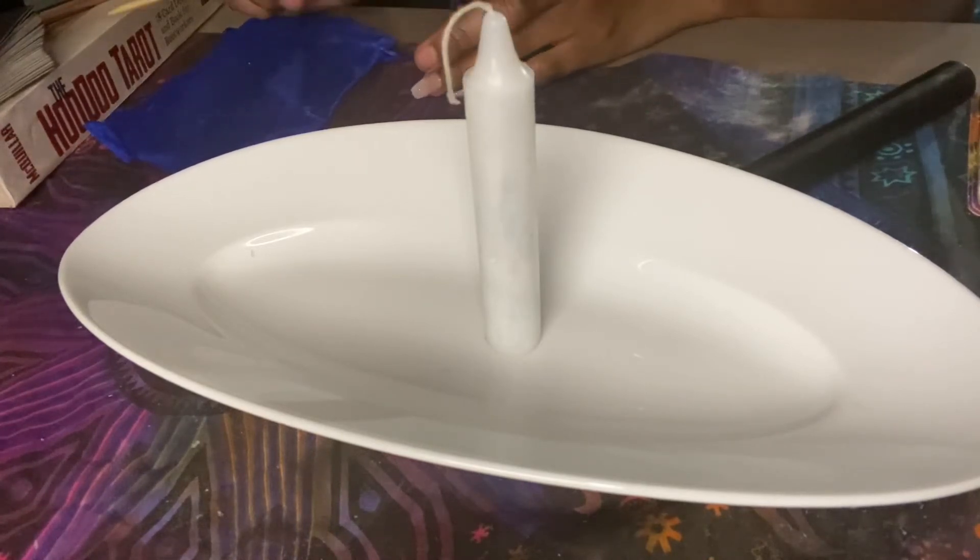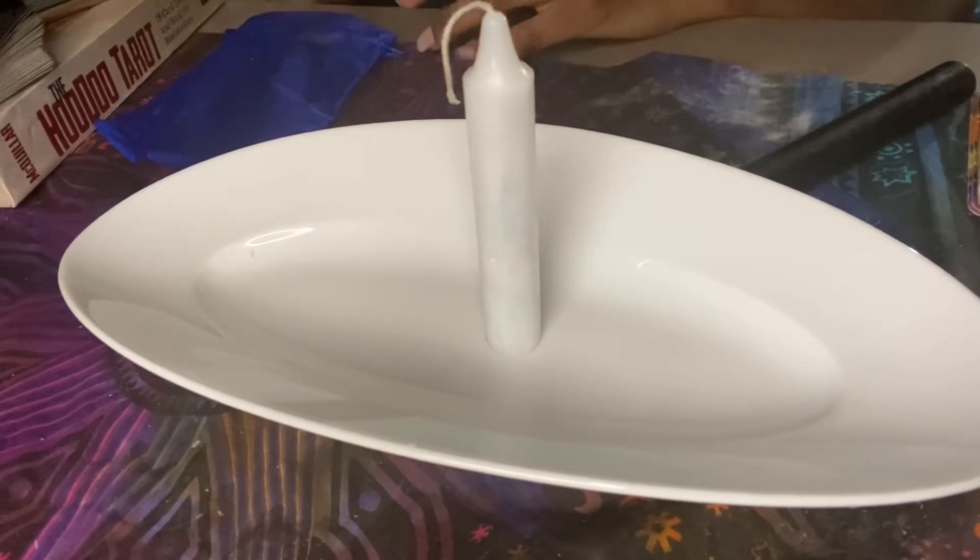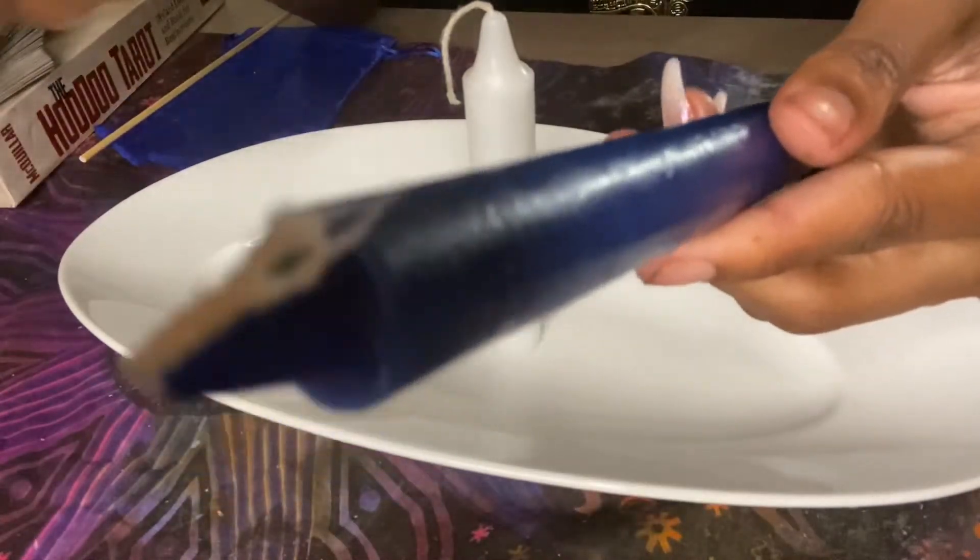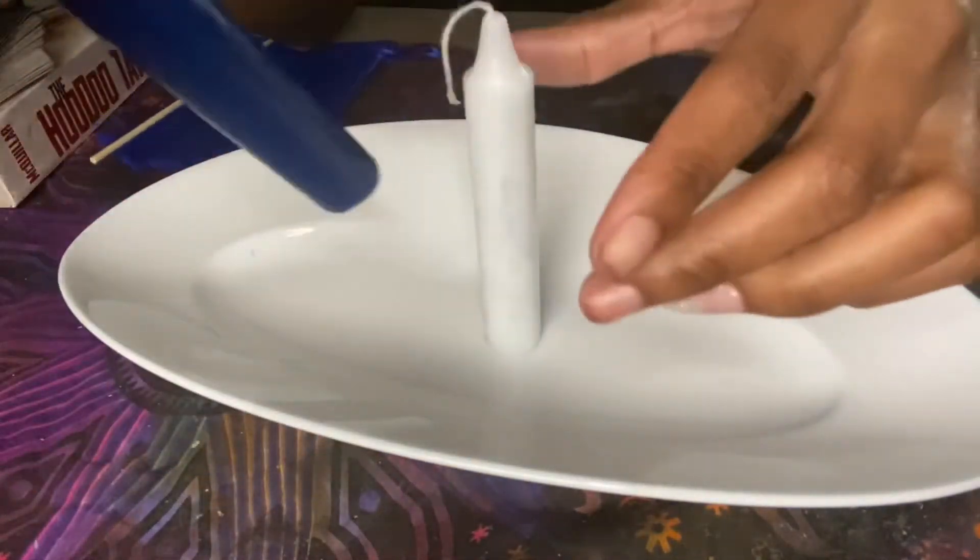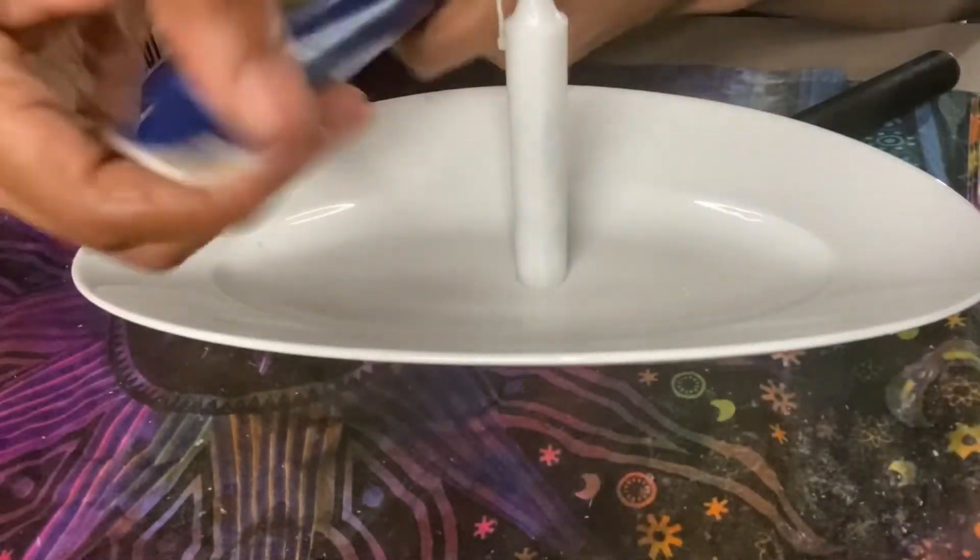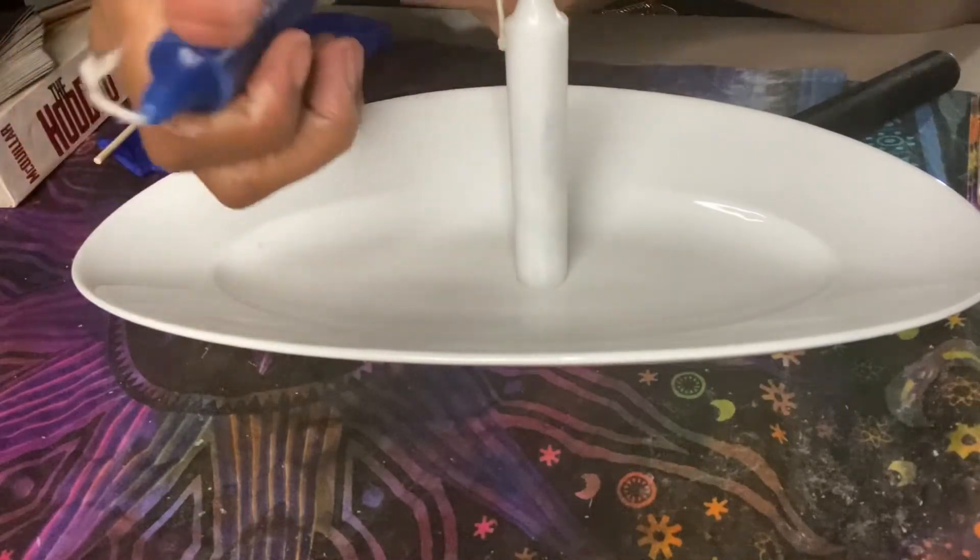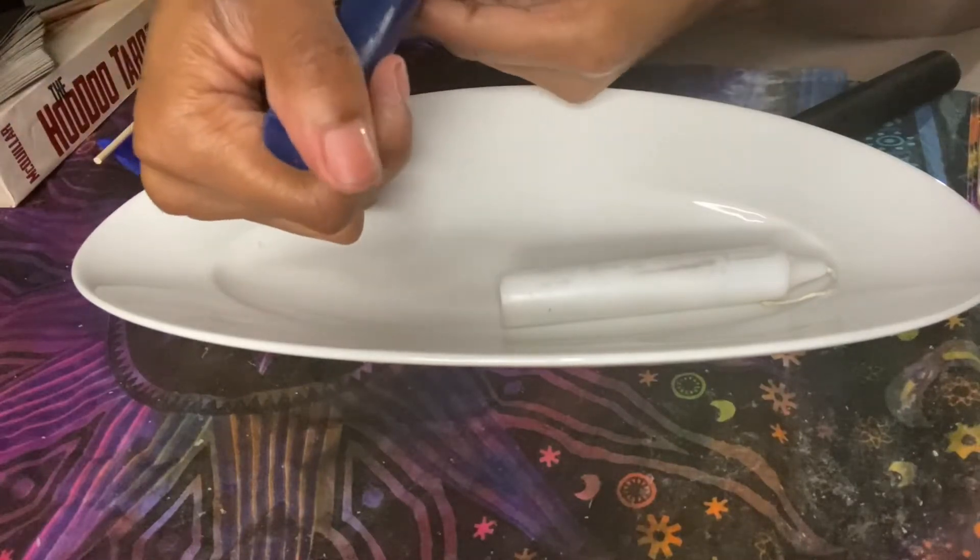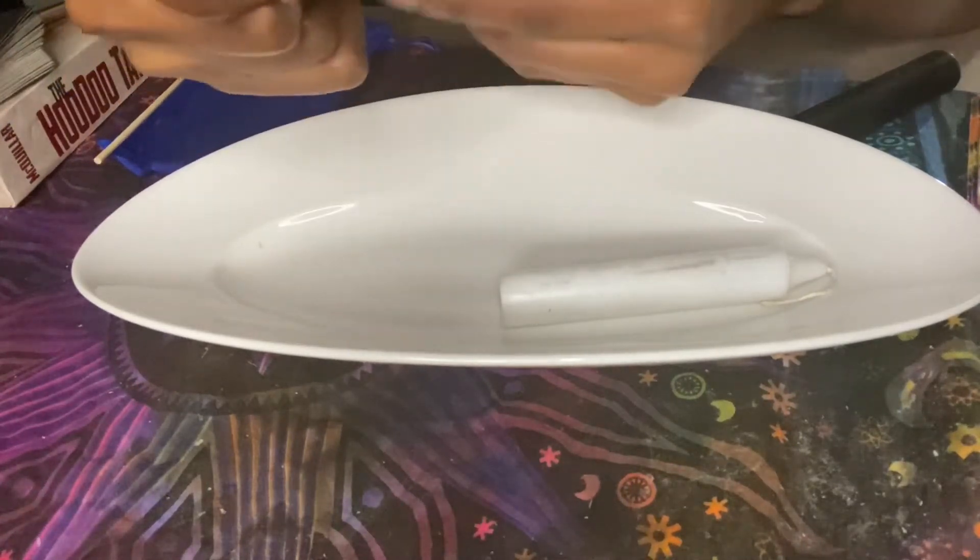Then you're going to take your oil, which is the tranquility oil, and rub it clockwise from the top. So like this from the top.